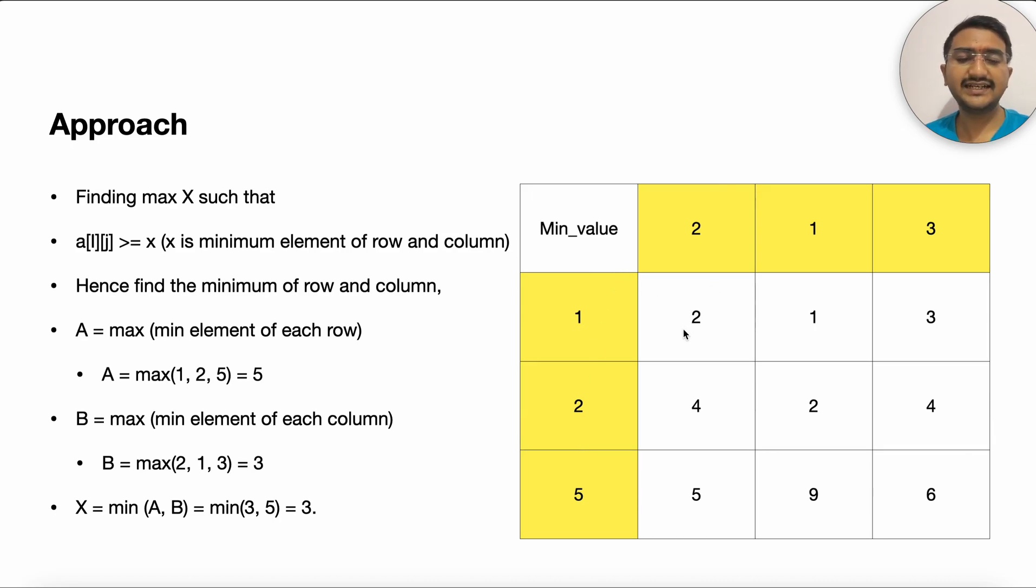Instead if you see I will just replace the 0th row and 0th column to have these values because we actually don't need the values once we are updated. If you see that row 3 has the minimum element 5, actually I don't care about the other elements 9 or 6.